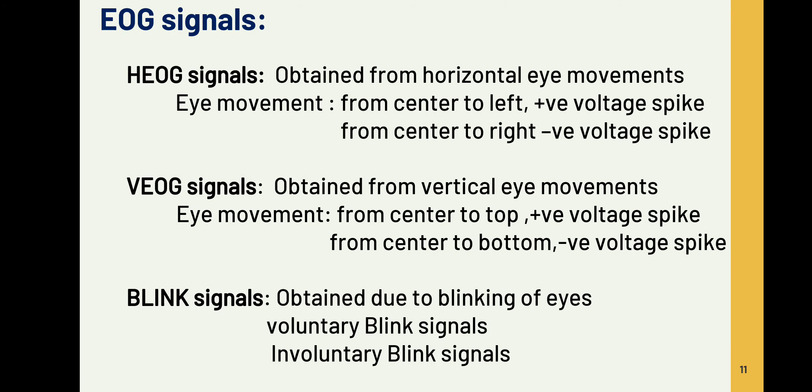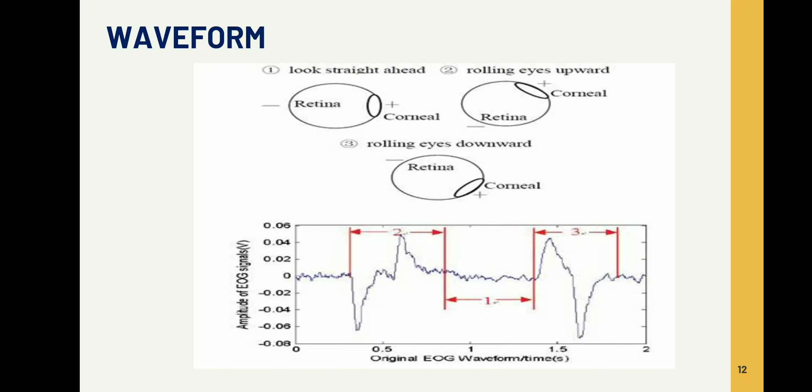What are the EOG signals? HEOG signals, VEOG signals, and blink signals. HEOG signals are acquired from horizontal eye movements, that is left and right. VEOG signals are acquired from vertical eye movements, that is top and bottom. And blink signals are due to blinking of eyes, that may be voluntary or involuntary signals. These are the waveforms that we acquire from EOG.